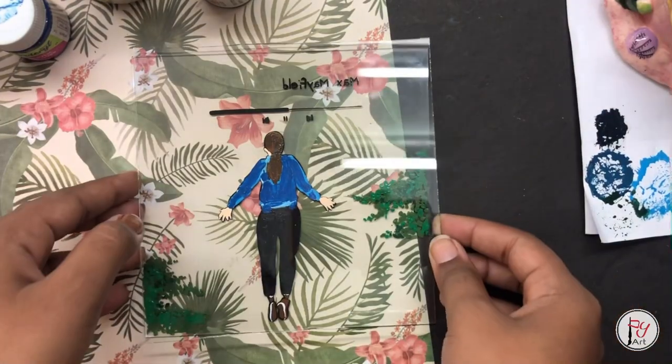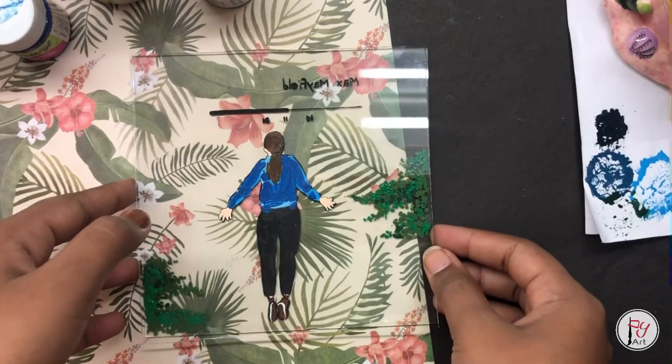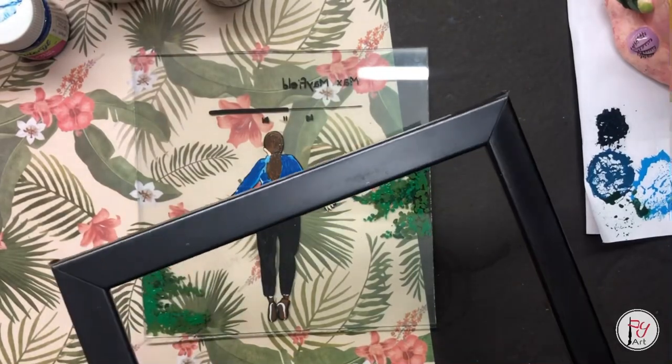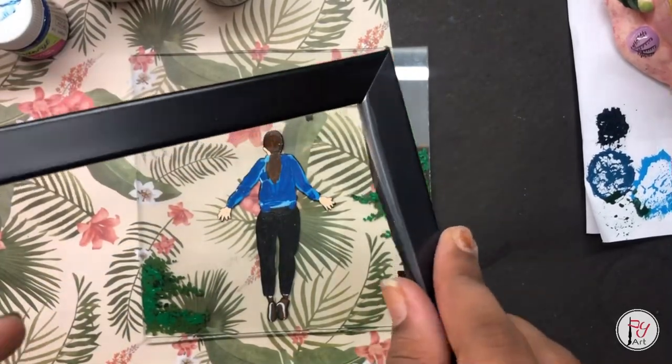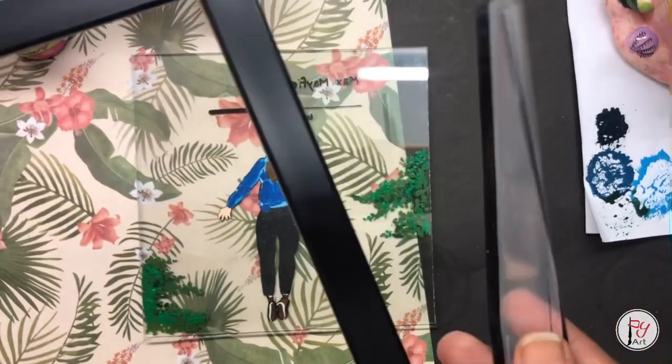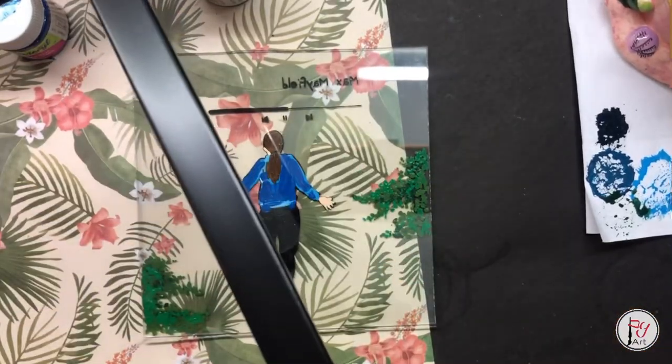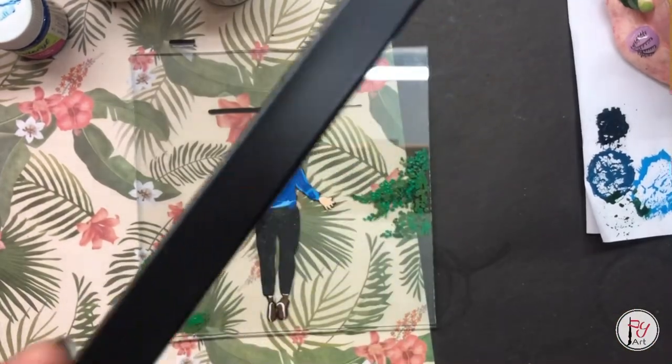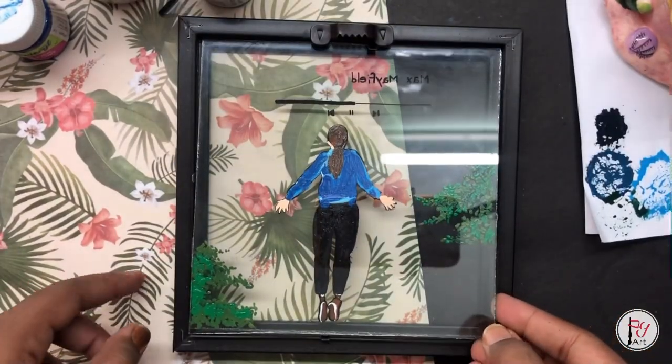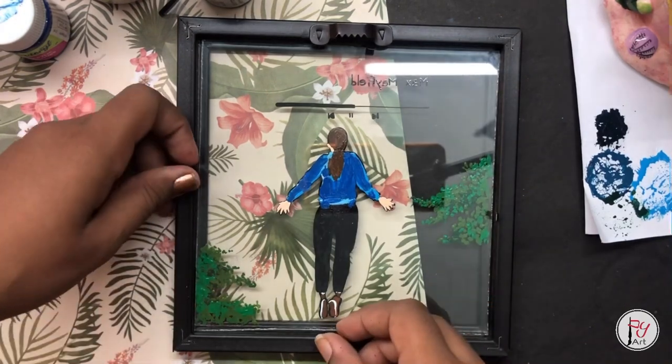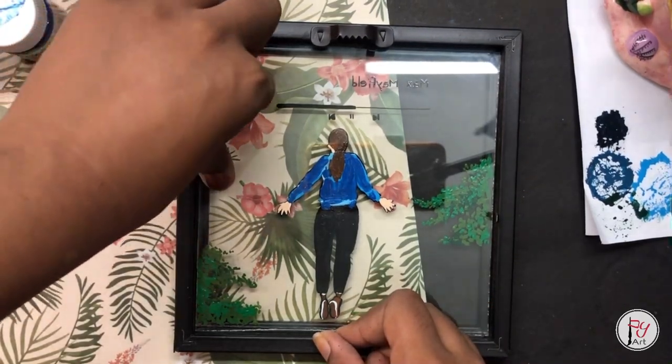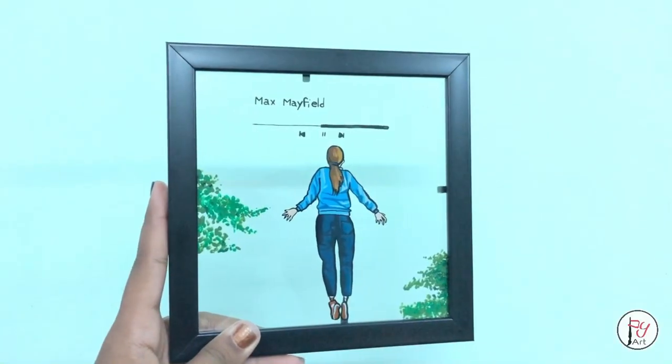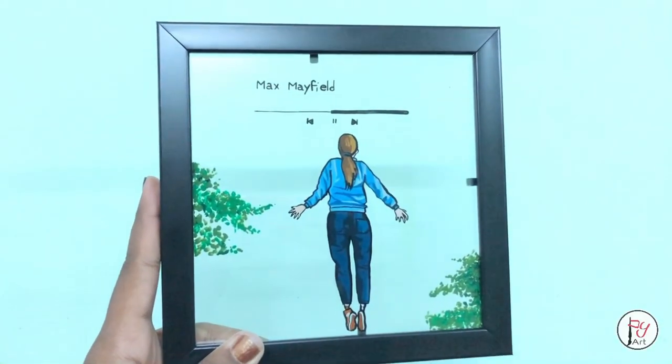Now we have finished the final work. Let's see what we did. We will add the glass to secure the paint. We will fix it in the frame. We will add paper to the frame and fix everything.